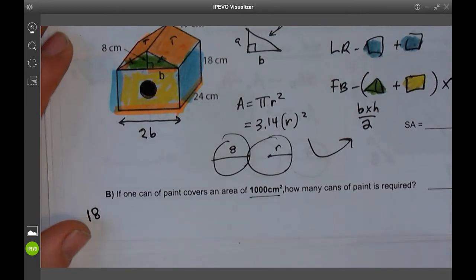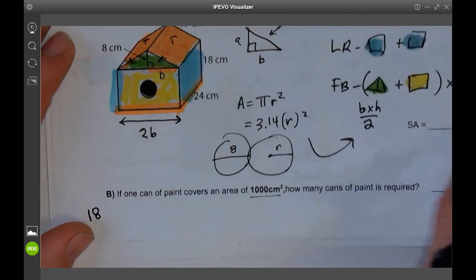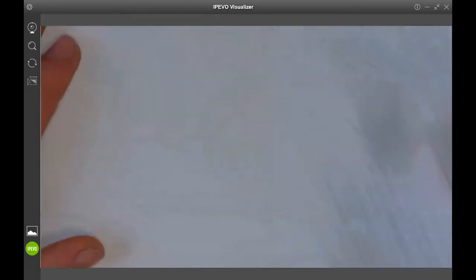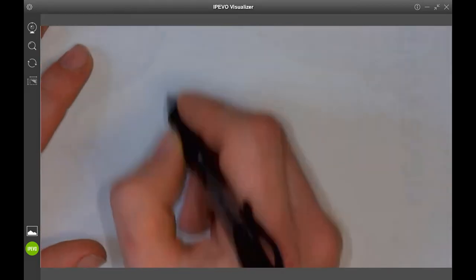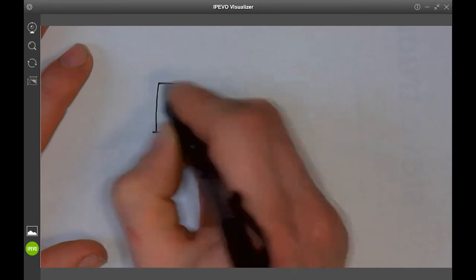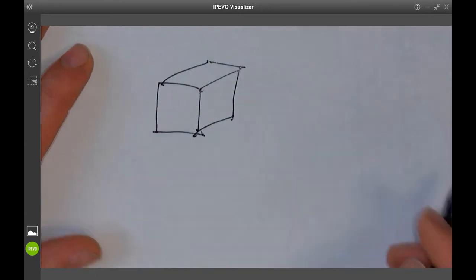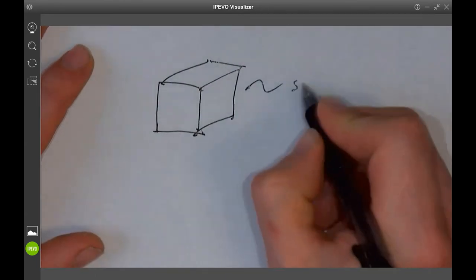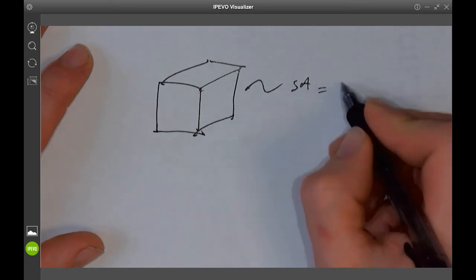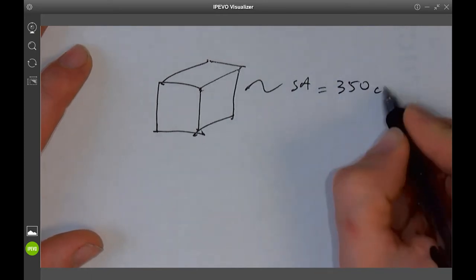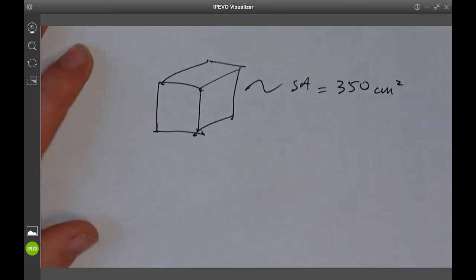Let's just show a different example. Let's say you had a box or whatever, doesn't really matter, and you calculated that the surface area of this thing was 350 centimeters squared.